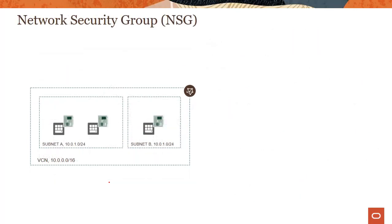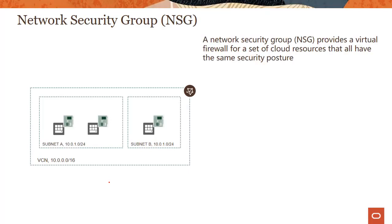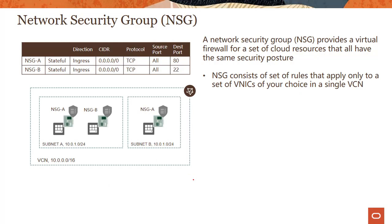Now let's talk about another security mechanism called network security group, or NSG. NSG provides a virtual firewall — like a security list — for a set of cloud resources that all have the same security posture. NSG consists of a set of rules that apply only to a set of virtual network interface cards of your choice in a single VCN. For example, two instances can share NSG1A allowing port 80 ingress traffic.